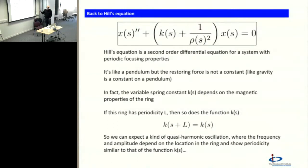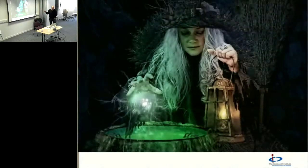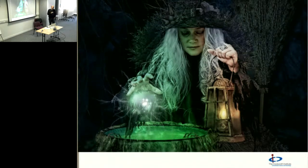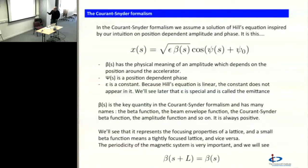That's our physics intuition about what the solution should look like. Let's write down a solution with those properties and see how far it gets us. It's a bit like witchcraft — I'm going to write down a solution that has those properties. That's a reasonable thing to do — it's called an ansatz in physics. If it's wrong, we just try something else. But I hate writing down solutions without justification, so it's half intuition, half witchcraft. This is called the Courant-Snyder formalism.